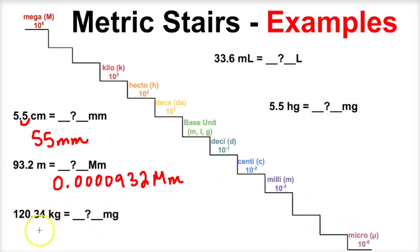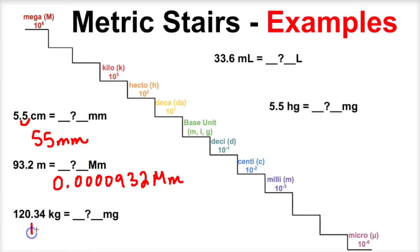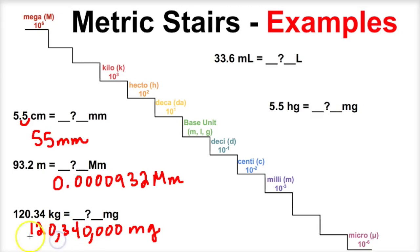So let's look at this problem. We have 120.34 kilograms and we want to figure out how many milligrams this is. Kilo is right here on the metric stairs, and we need to take 1, 2, 3, 4, 5, 6 steps to get down to milli. So we're going to have to move this decimal six times to the right — because we're moving down and to the right. And if we do that, we will end up with 120,340,000 milligrams equaling 120.34 kilograms.